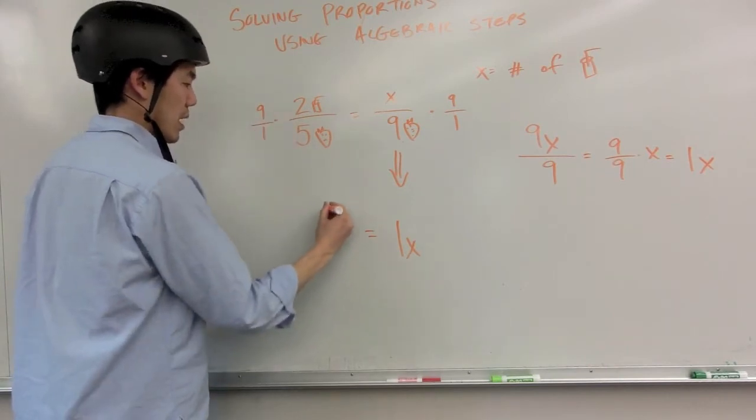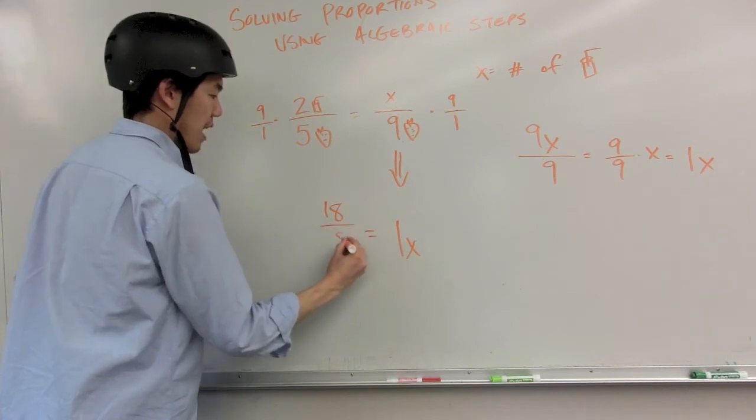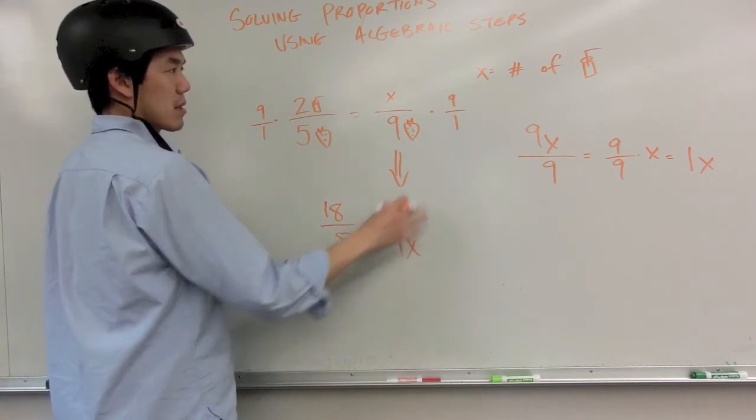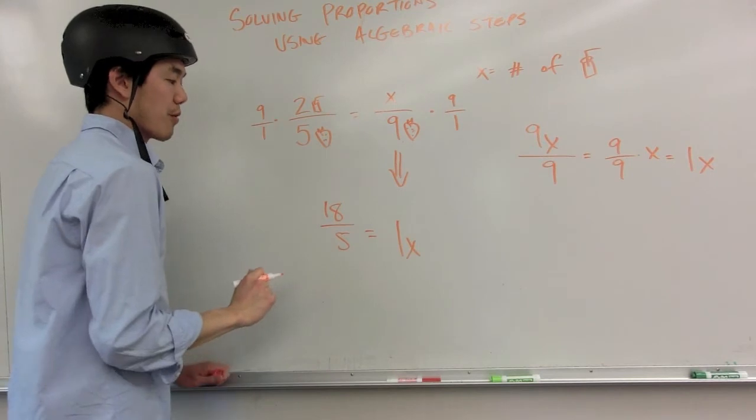Nine times two, I have eighteen. One times five, I have five. One X, the number of smoothies, is equal to eighteen over five.